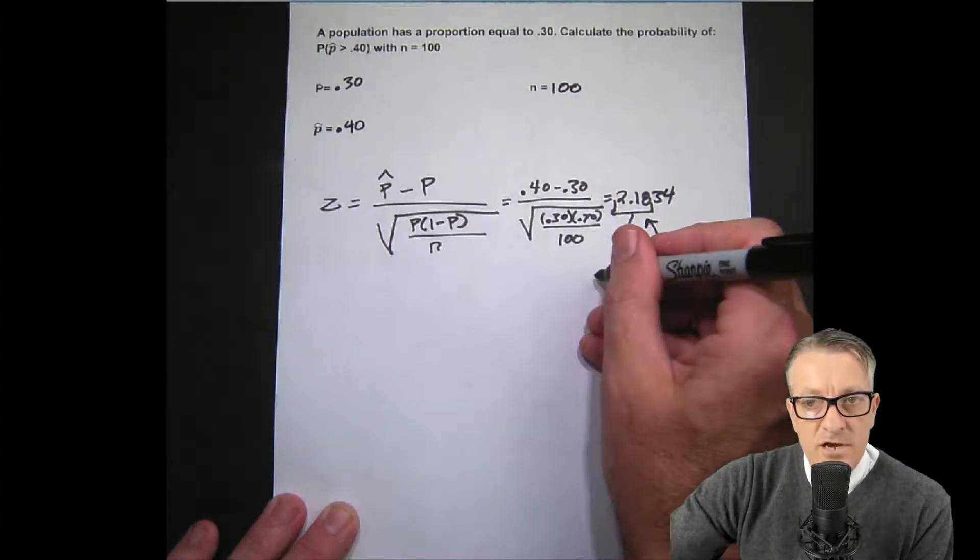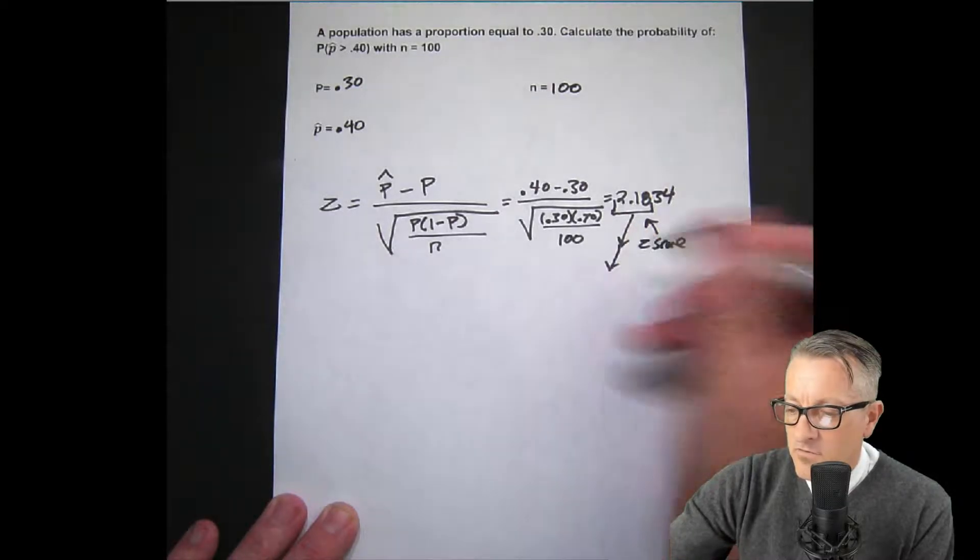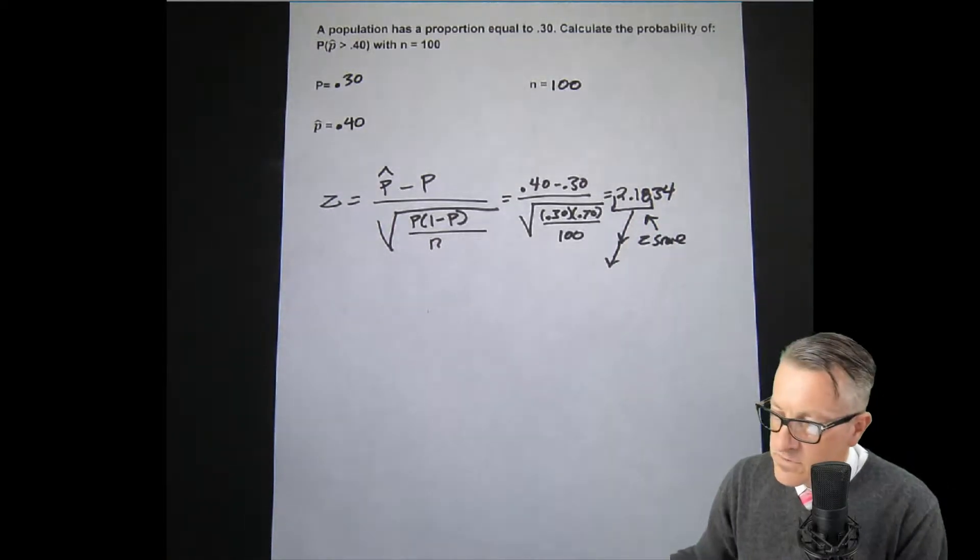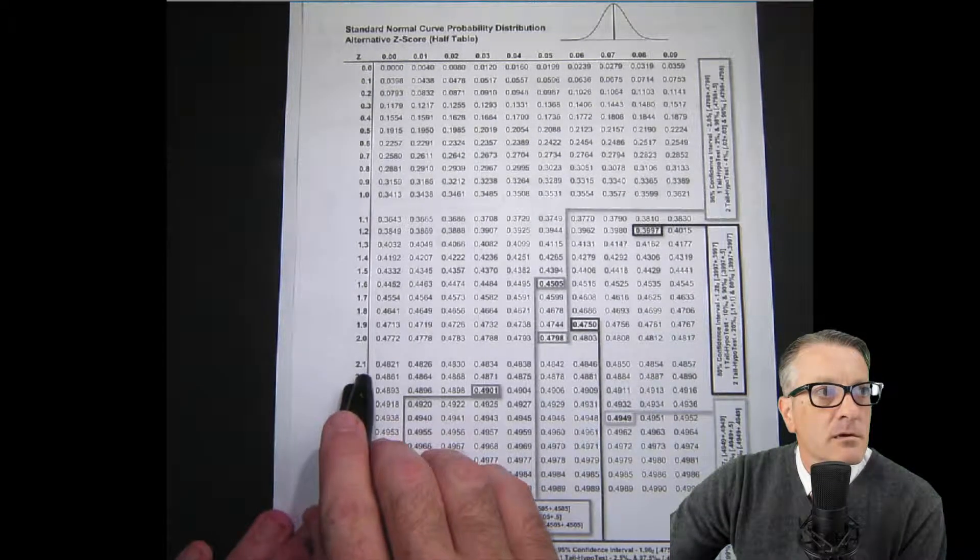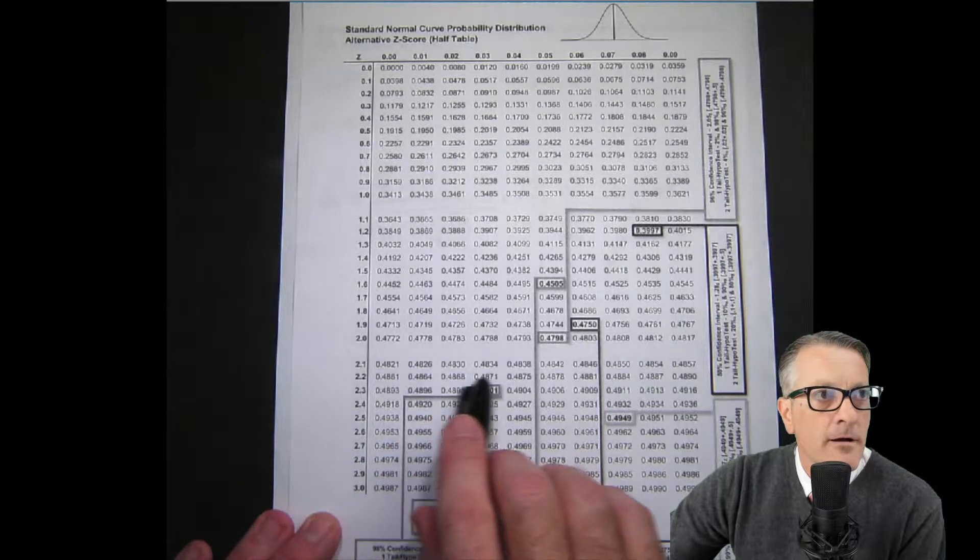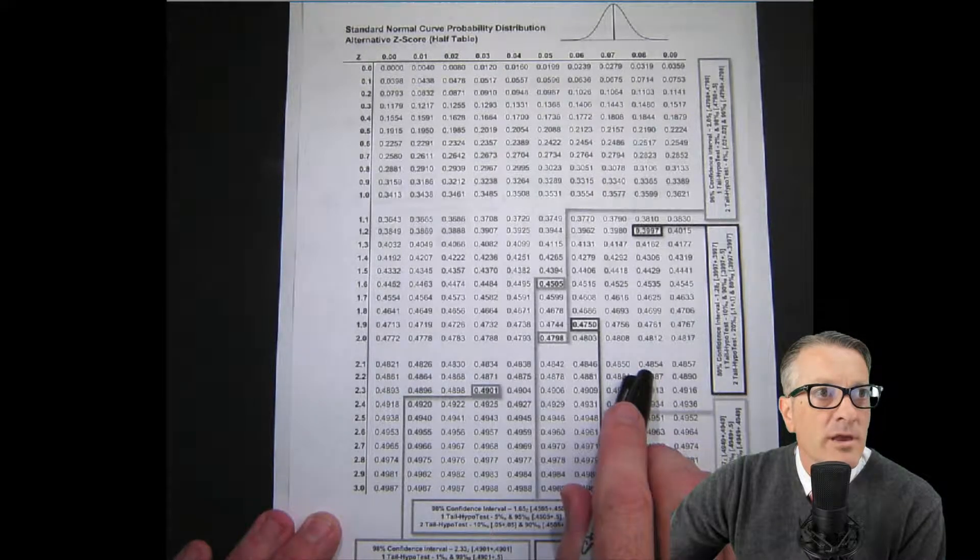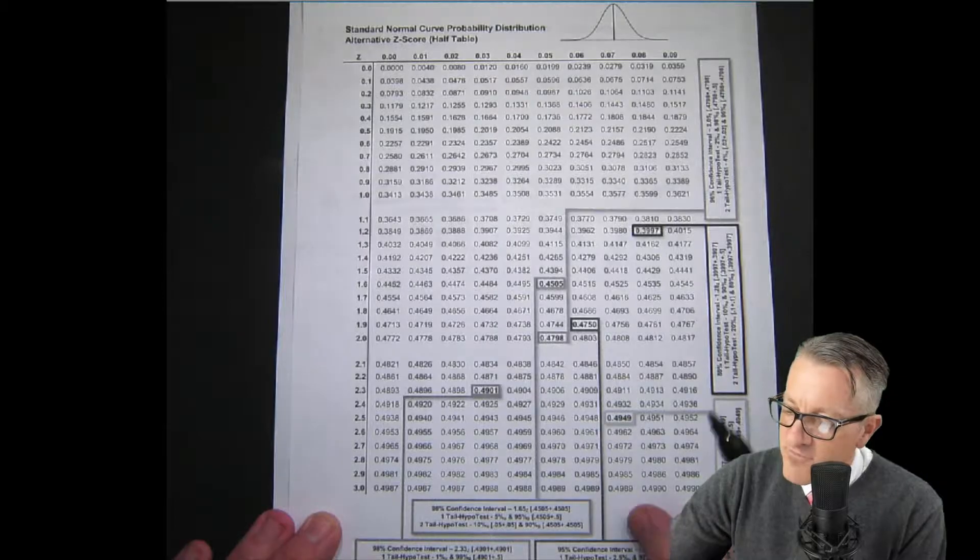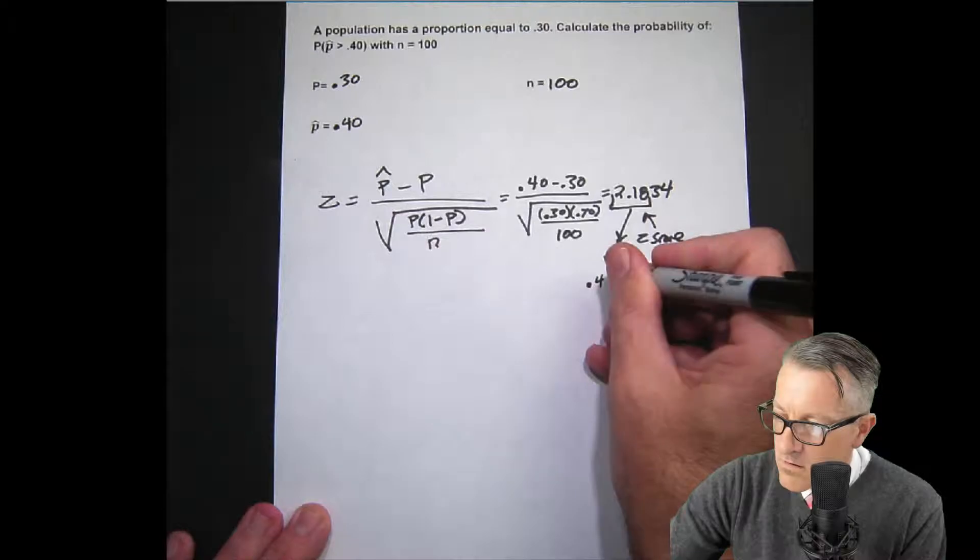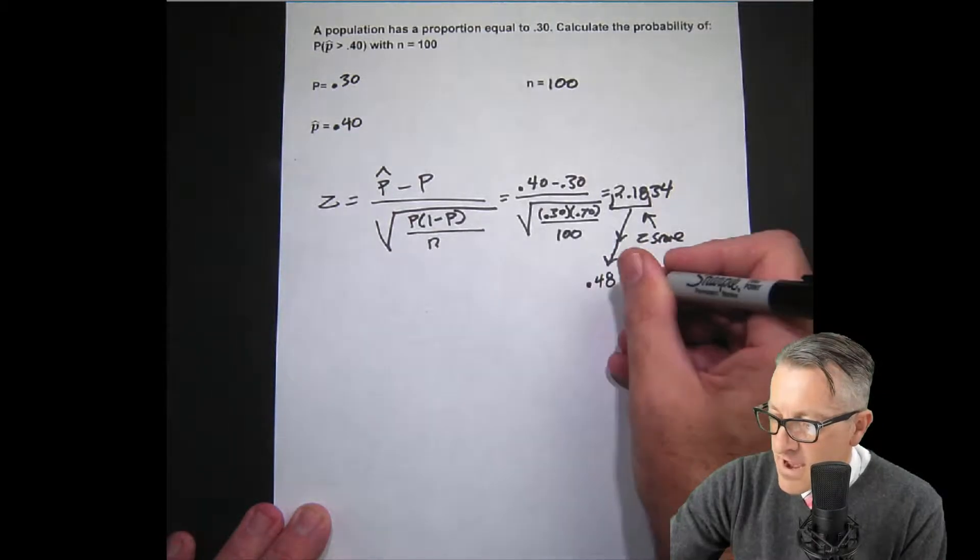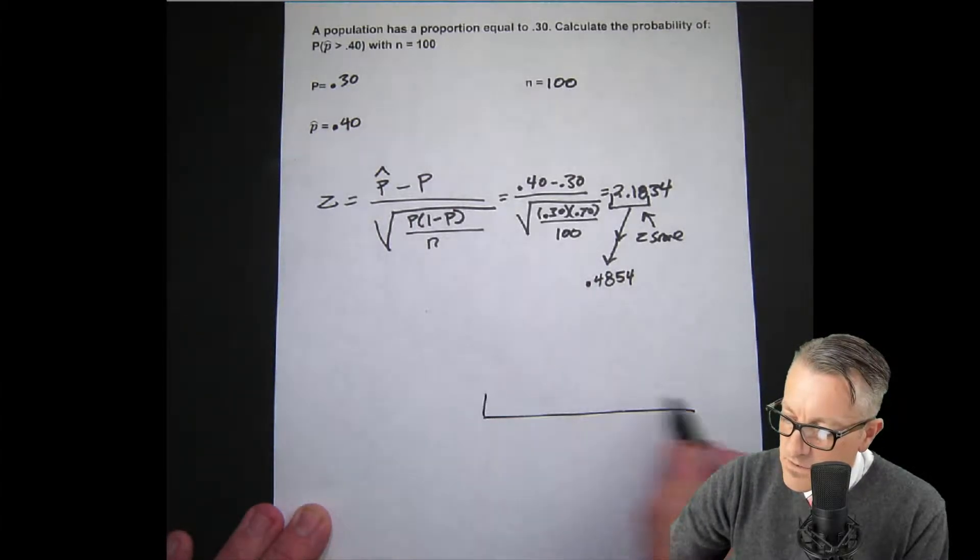2.18 right there: 0.4854. 0.4854. I'm going to draw a diagram to show you where this is all going.